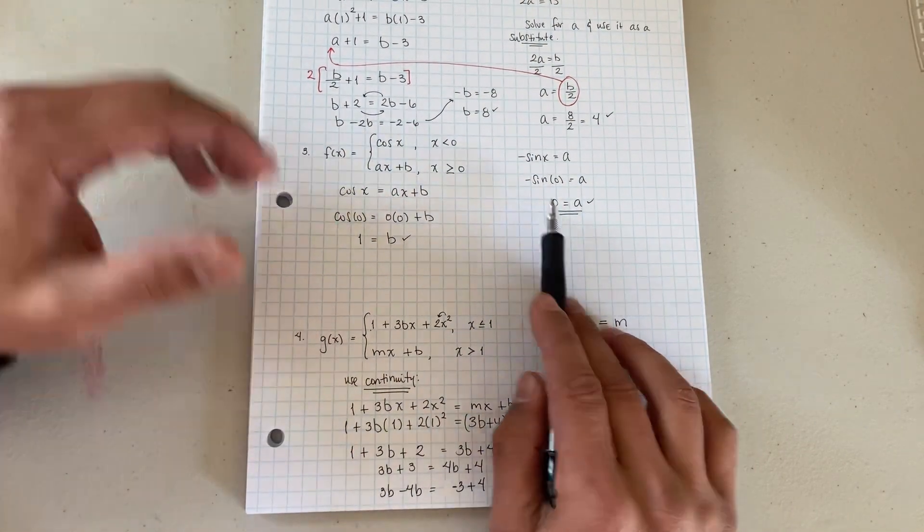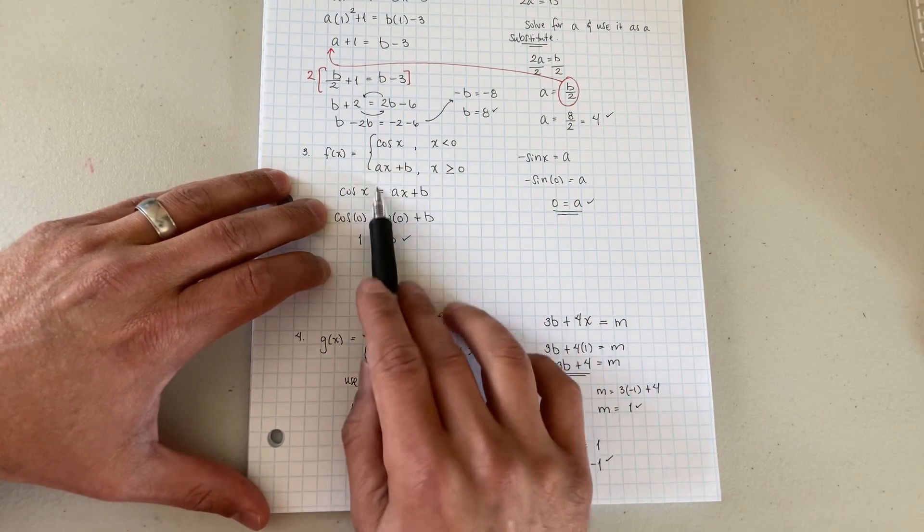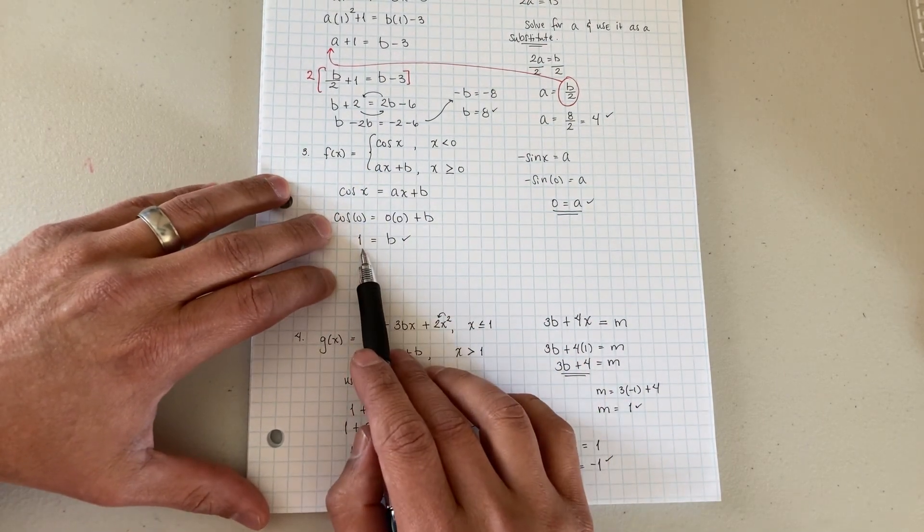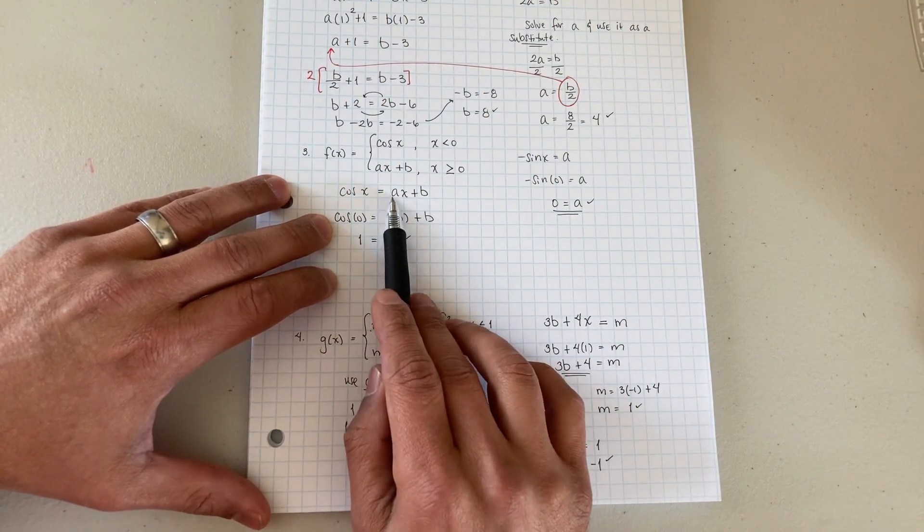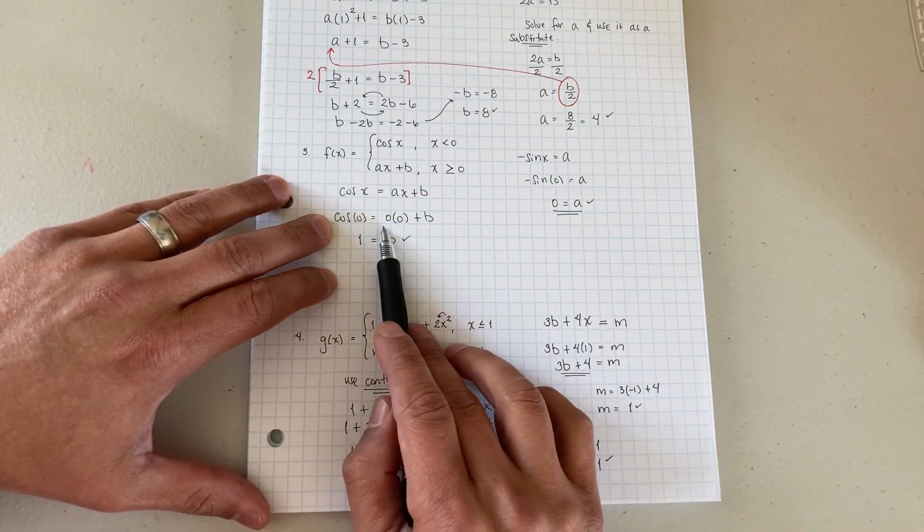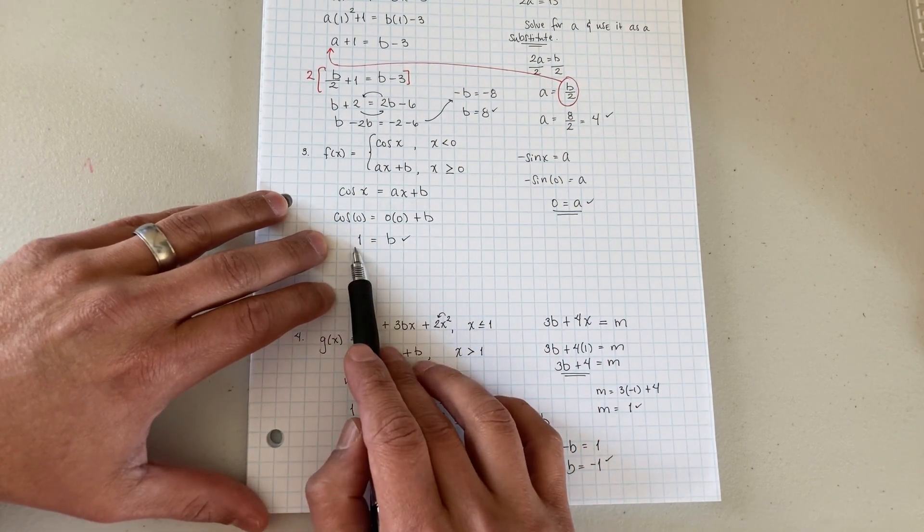Now you go back to continuity, limit from the left equals the limit from the right. And then what happens? You plug in your zero, x is zero, x is zero, and now you know your a value which is also zero. You end up with b is equal to one. Cosine of zero is one.